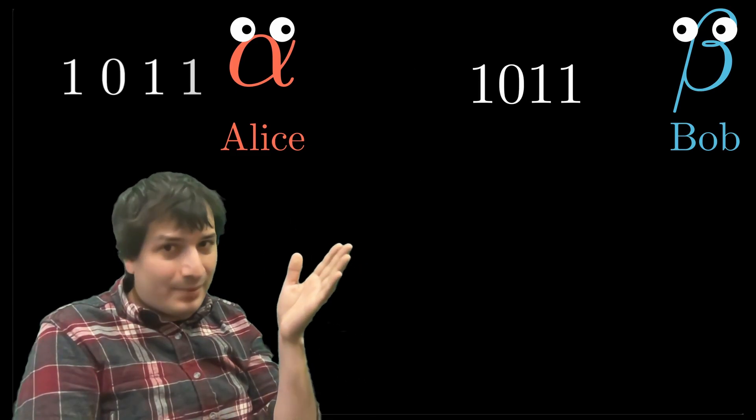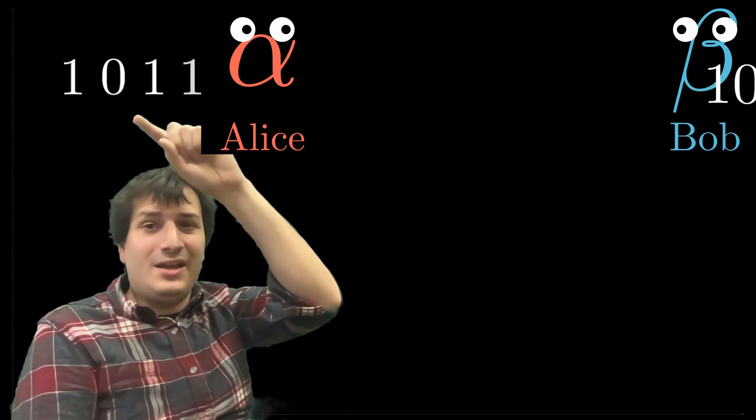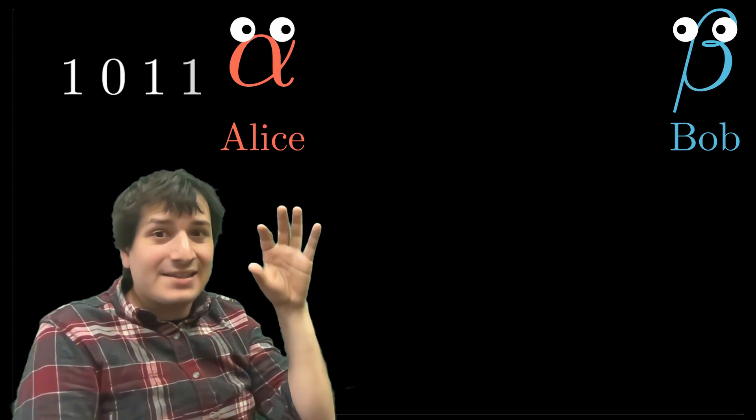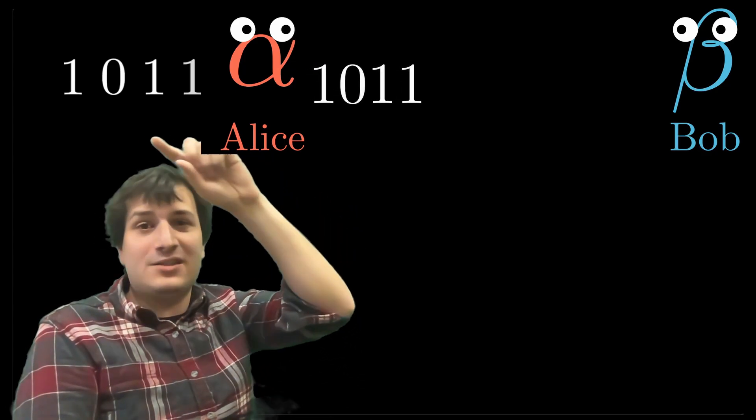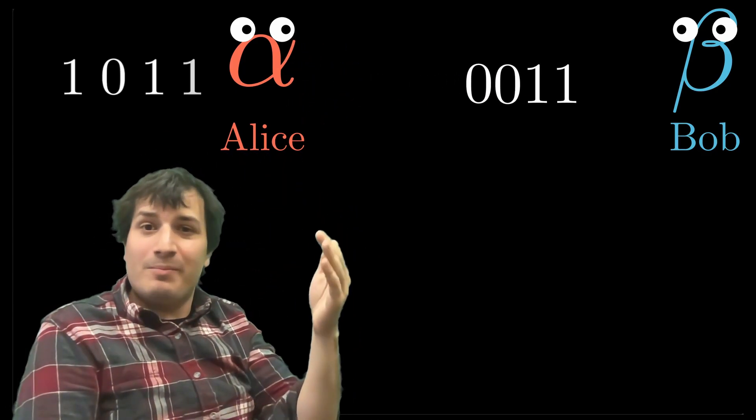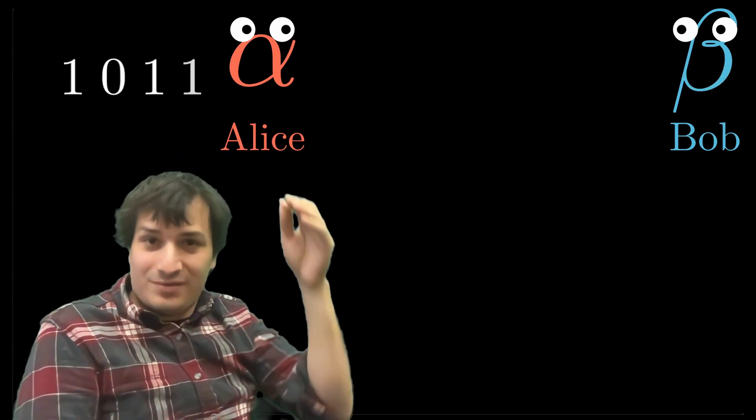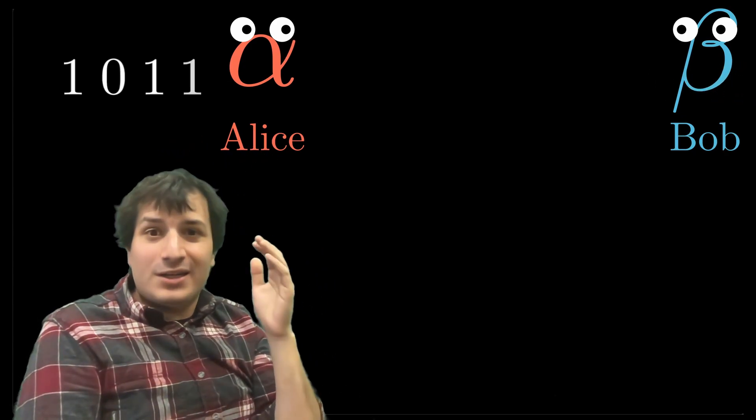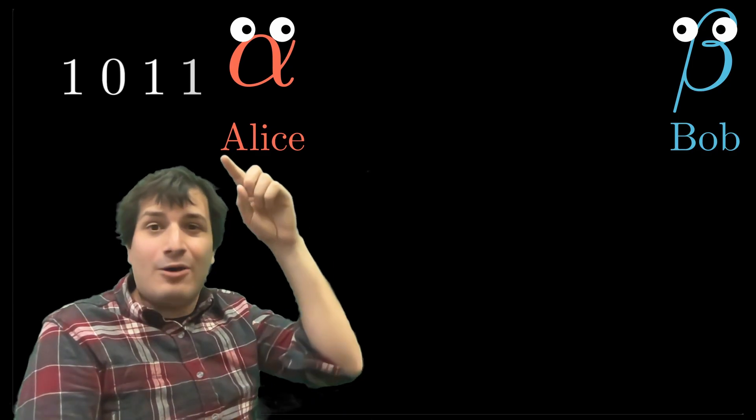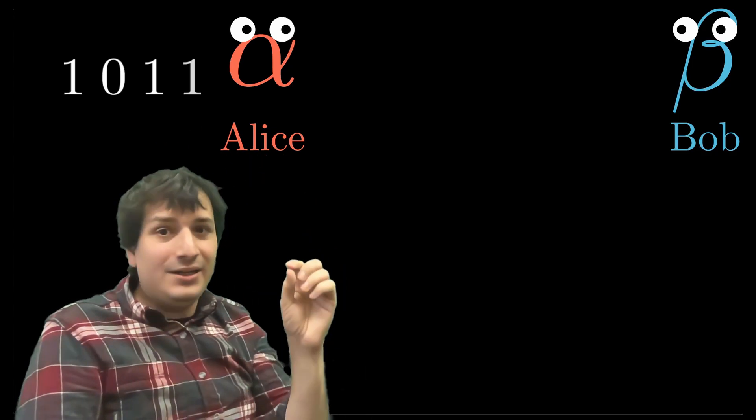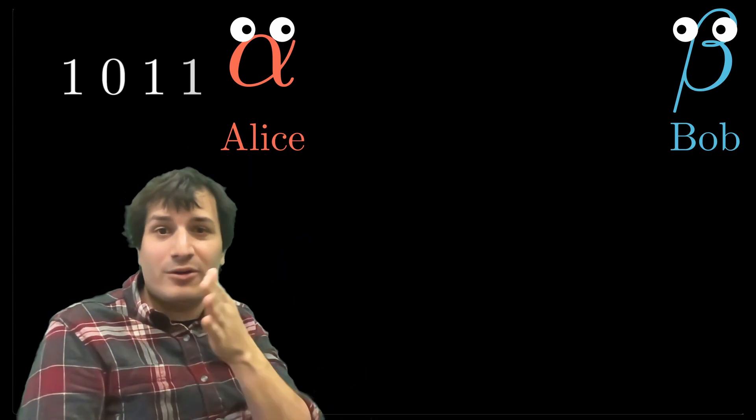The problem that we're going to imagine that Alice and Bob have is that any of these four bits could be accidentally by random chance flipped in transit. So maybe Alice means to send 1011, but the message that arrives for Bob is 0011. That would be a disaster, the message would be completely ruined. So what we're going to do is come up with a way to figure out if there's a single error, if one of the bits gets flipped, how can we figure out which one was flipped and correct it.